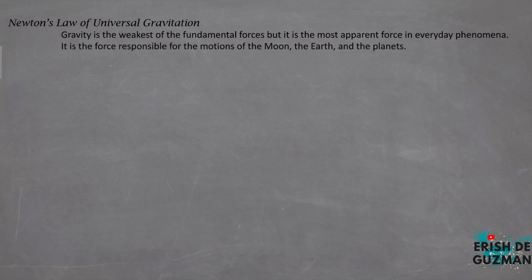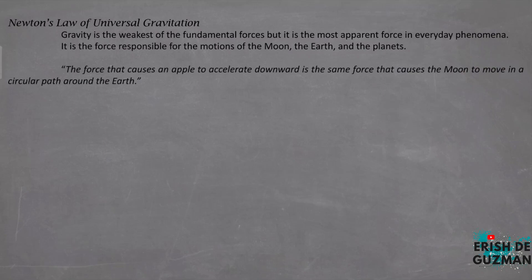The idea that came to Newton is that the force that causes an apple to accelerate downward is the same force that causes the Moon to move in a circular path around the Earth. Isaac Newton wondered about the nature of the force that must keep the Moon in its nearly circular orbit around the Earth.